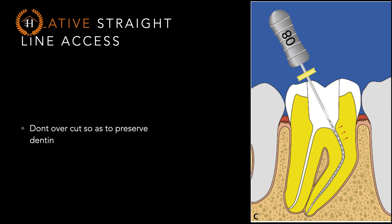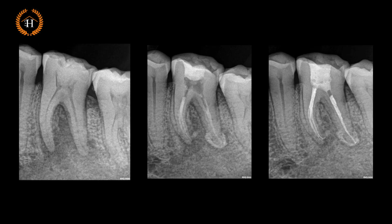Therefore, today's concept is more of a relative straight-line access. If the file is going smoothly to the apical third and it is not an absolute straight line — slightly slanting or going in an off-center manner — please don't go ahead and exuberantly remove dentine using orifice openers, Gates Glidden, or Peeso reamers. This removal of the dentine triangle has nothing to do with the success of endodontic treatment.